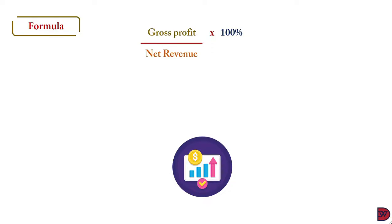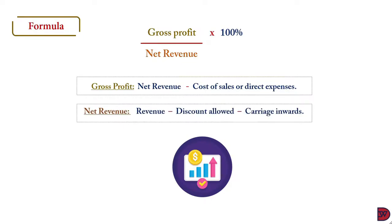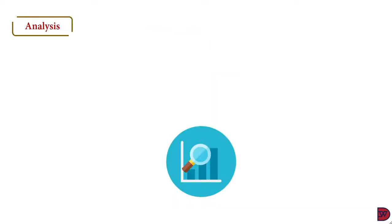The formula for calculating gross profit margin is: gross profit divided by net revenue, multiplied by 100%. Gross profit is calculated as net revenue less cost of sales, cost of goods sold, or direct expenses — depending on the type of business. If you are in production, you use cost of sales or cost of production; if you are in service rendering, you use direct expenses. Net revenue in the formula is revenue less any direct deductions such as discount allowed or carriage inwards.